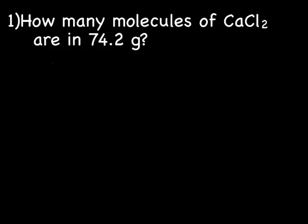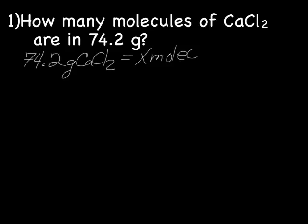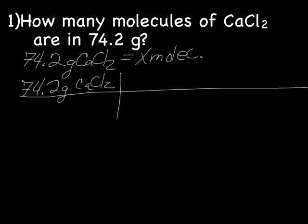How many molecules of CaCl2 are in 74.2 grams? So we'll write the question: 74.2 grams of calcium chloride equals X molecules. We'll start by putting our known in the grid, 74.2 grams CaCl2 over 1. This time, our units are grams and molecules.